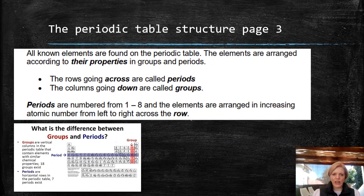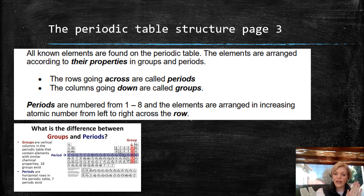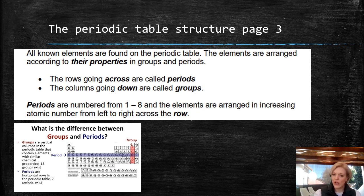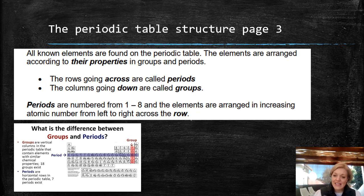At the top of page three we are going to discuss the two things you need to add to your periodic table — periods and groups. Groups are the columns, going from one to 18 or one to eight. Periods are the rows, and there are seven that exist. Groups are vertical columns in the periodic table that contain elements with similar properties — everything in that group is going to behave very similarly because they share the same group.